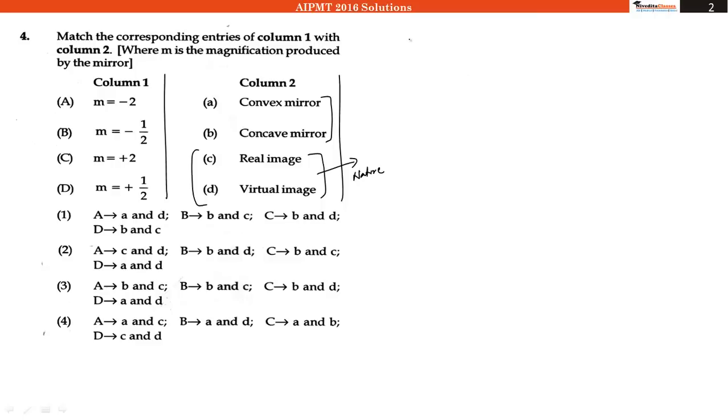So we have to remember, we should recall that in case of mirrors, if M is negative, it means that nature of image and object will be same.